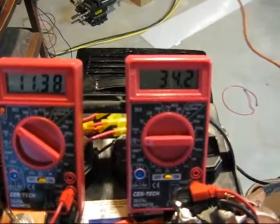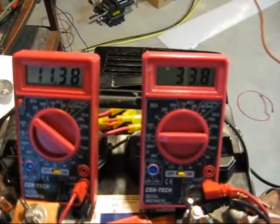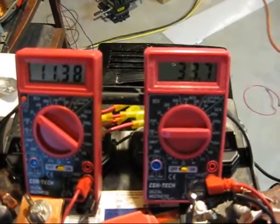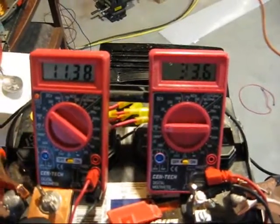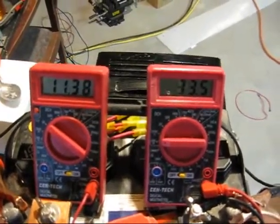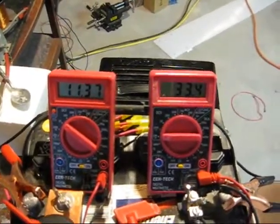After it runs for a period of time continually, that amperage will drop. See, it's dropping now. It's down to 33.7, 33.6. So as it runs, the voltage drops. And it seems to get more and more efficient as it runs.